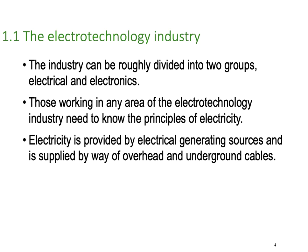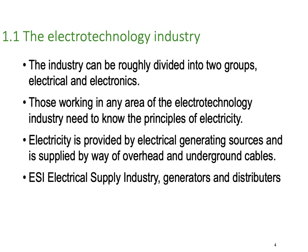Electricity is provided by generating sources and is supplied by wire of overhead and underground cables. You've all seen very large towers to just small poles with cables on them for above ground, and of course underground you won't see at all. ESI stands for the electrical supply industry — that's the abbreviation for the people who do the generating and the distributing of our power.